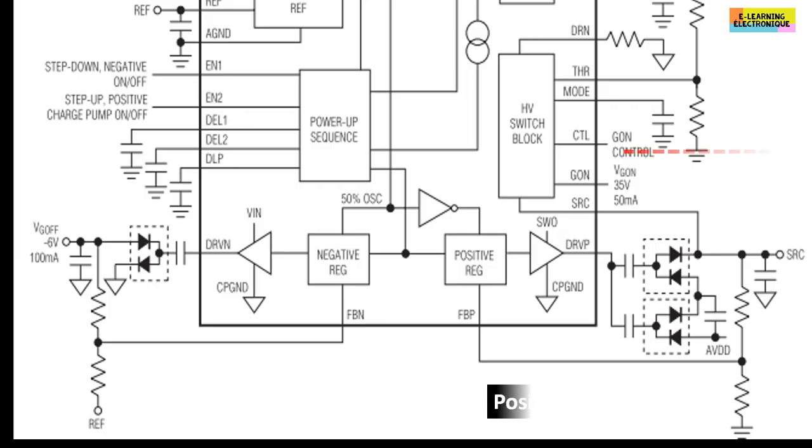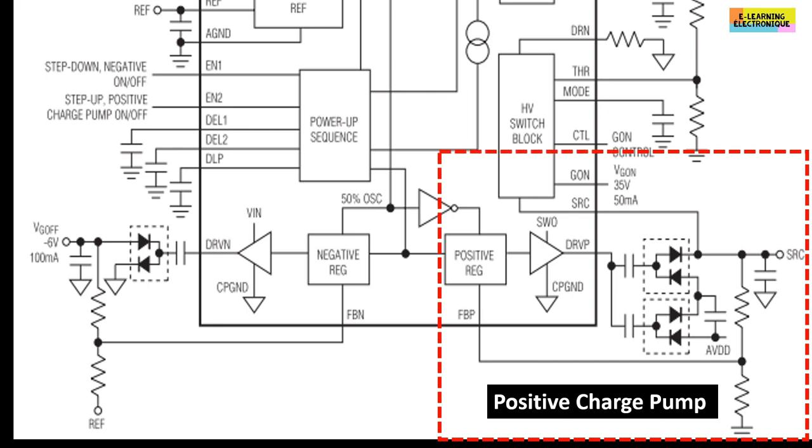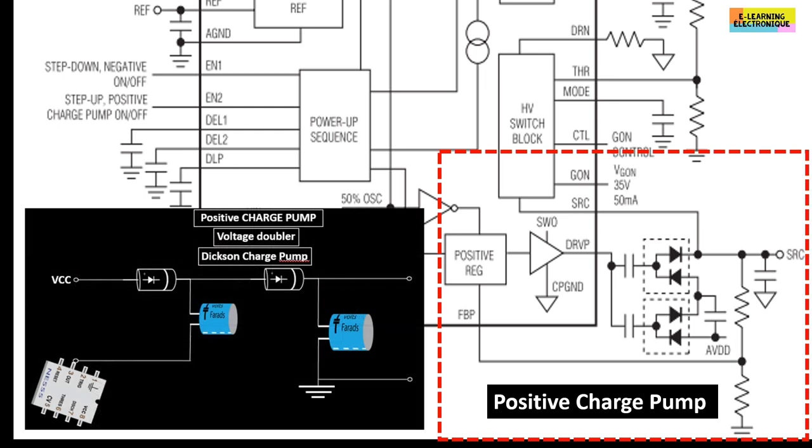The positive charge pump circuit has some particularities compared to the circuit presented before. In the classical circuit, called voltage doubler, there are two diodes and two capacitors. In the diagram of this circuit, there are four diodes and four capacitors.